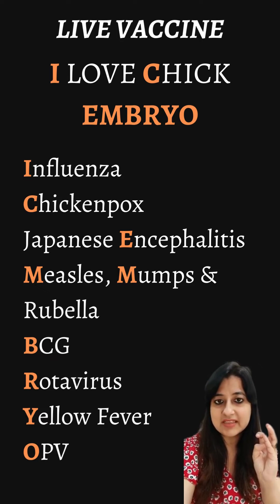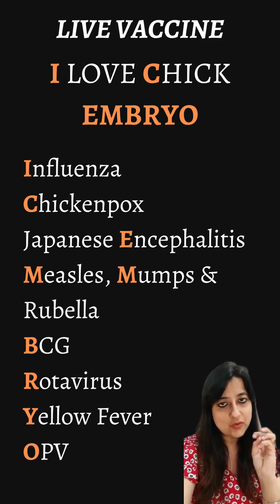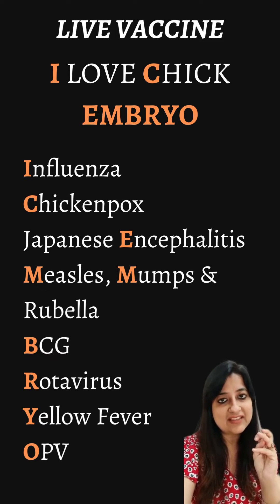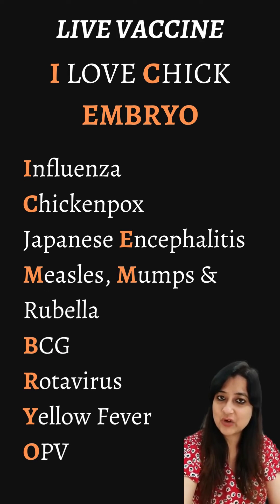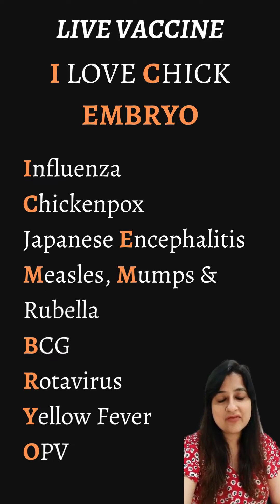M stands for measles and measles rubella, B stands for BCG, R stands for rotavirus, Y stands for yellow fever, and O stands for OPV. That's the mnemonic for live vaccines.